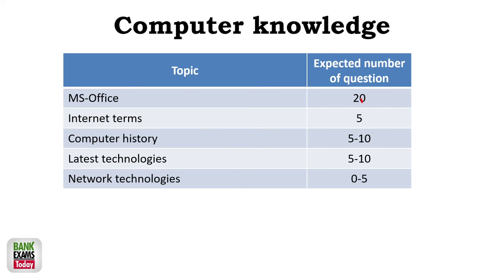In the computer knowledge, MS Office, there's no exact formula for how many questions come from which topic. It's random, maybe 2-3, 2-3 questions from each of these topics. Computer history, latest technologies, network technologies, internet terms, common topics. The same question bank we have, just go through that.